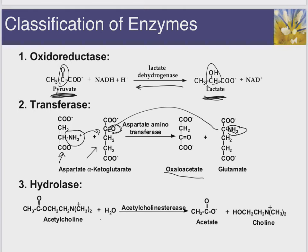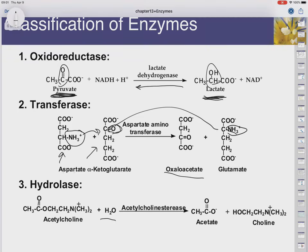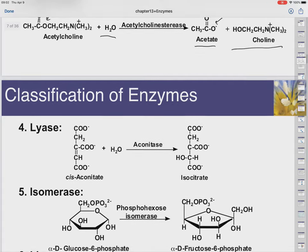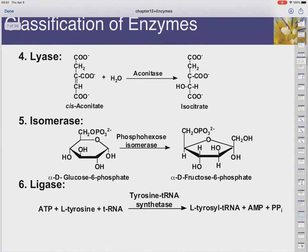That's a transferase. A hydrolase is one that uses water to cut. As an example, acetylcholine can be hydrolyzed. We recognize that there's an ester bond here, so we can get a carboxylic acid and an alcohol from this depending on the conditions. It looks like we're going to get the carboxylate ion and the alcohol, so this must be in pH neutral or basic conditions. Water cutting — that's a hydrolase.